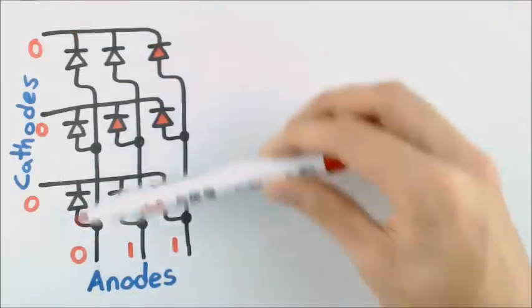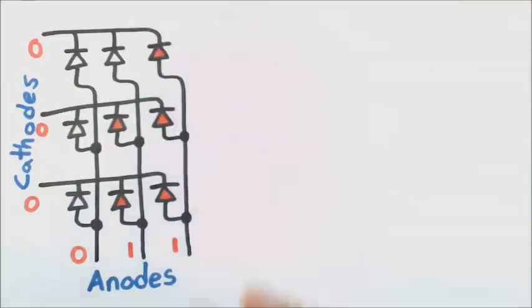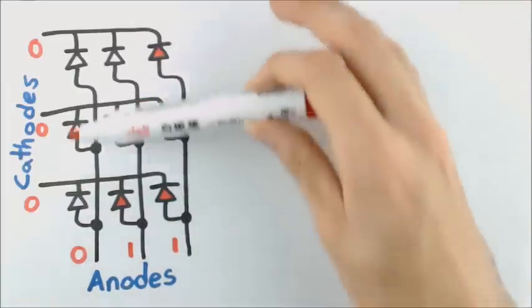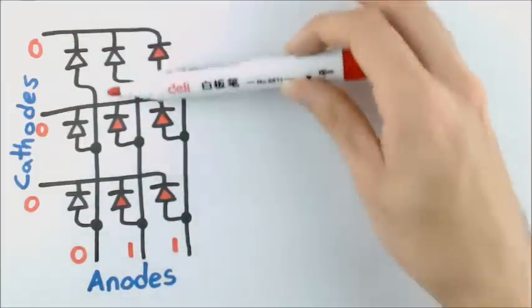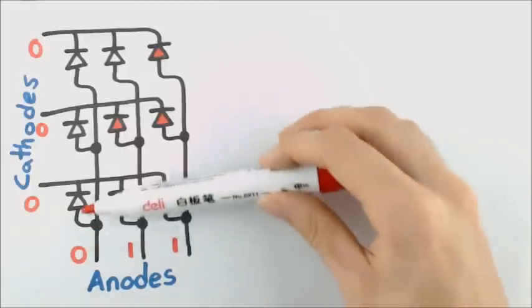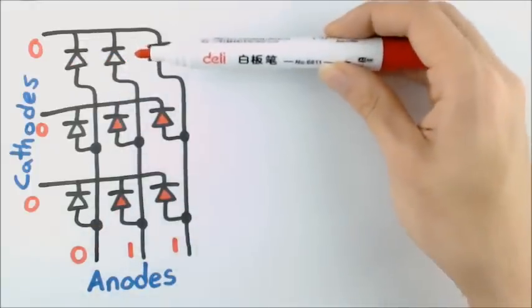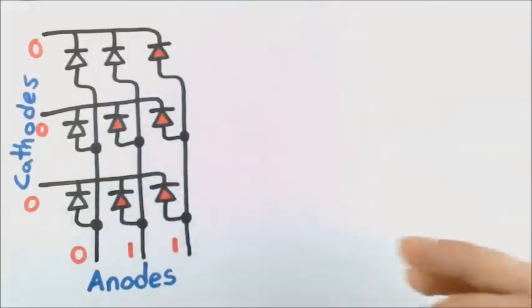Then restarting and continuing this pattern. By doing only one column at a time, we won't run into any problems like this. Of course, if we turn on one column after the other, you would expect flickering, and if we do this slowly, we will get that.